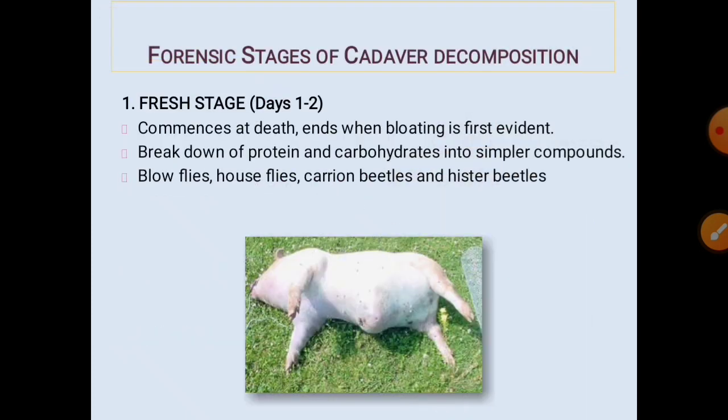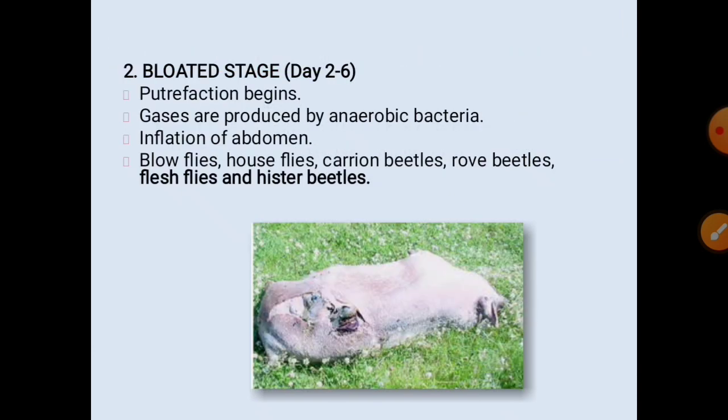Sap feeding beetles from the family Nitidulidae arrive at the last stages of decomposition. The stages of cadaver decomposition are as follows: The fresh stage lasts one to two days, commencing at death and ending when bloating begins — breakdown of proteins and carbohydrates into simple compounds occurs. Insects present: blow flies, house flies, carrion beetles, and hister beetles. The bloated stage lasts two to six days; putrefaction begins, gases are produced by anaerobic bacteria, and the abdomen inflates and may burst. Insects present: blow flies, house flies, carrion beetles, rove beetles, flesh flies, and hister beetles.